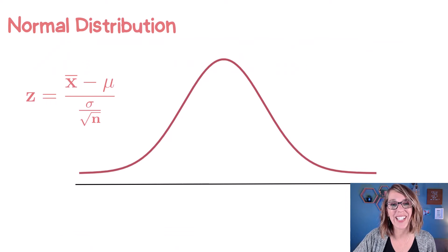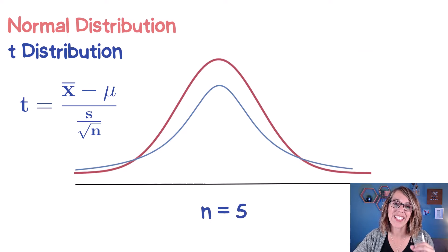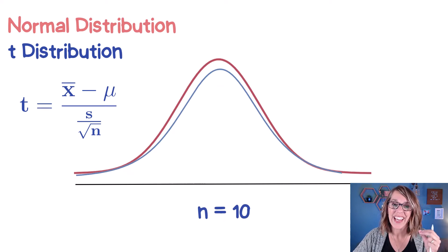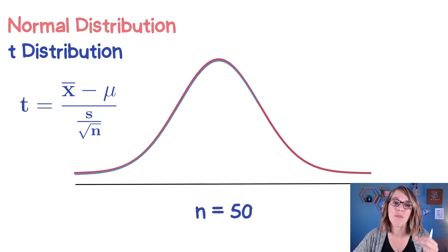The Z statistic lives on the normal distribution. That T statistic lives on the T distribution. Since we only have that sample standard deviation, notice how it's a little bit wider because we are just estimating that standard deviation. But as N gets bigger, as our sample size gets bigger, that T distribution looks more and more like the normal distribution.